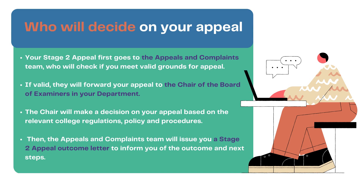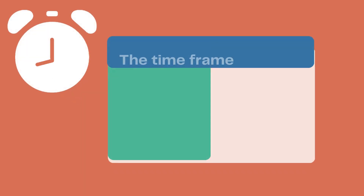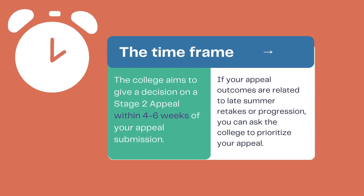Your Stage 2 appeal form first goes to the Appeals and Complaints team, who will check if you have valid grounds for appeal. If they decide your appeal is valid, they will forward it to the Chair of the Board of Examiners in your department. The Chair will decide on your appeal based on the relevant college regulations, policies and procedures, and the Appeals and Complaints team will then issue you a Stage 2 Appeal Outcome Letter. The college aims to give a decision on a Stage 2 appeal within 4 to 6 weeks of your submission.